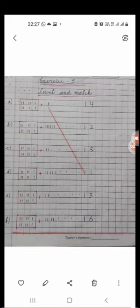On the left side you see there are bundles and also ones, bundles and ones. On the right side you see the numerals. You have to count the tens and ones on the left side and match with the numerals. The first one I have already done for you.